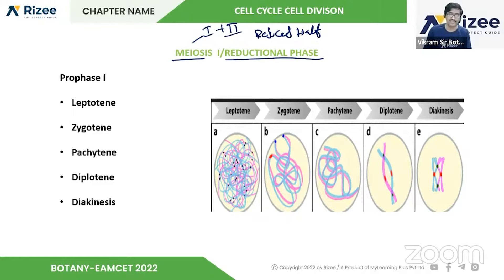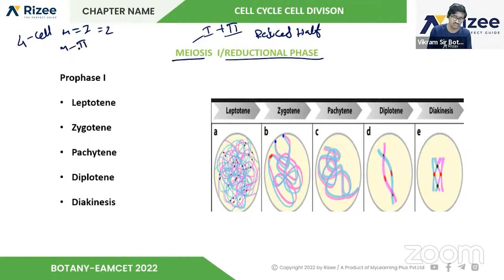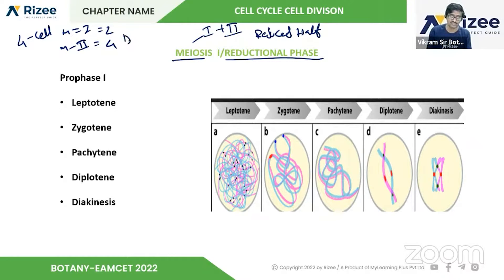In Meiosis 1, two cells will be formed, and in Meiosis 2, four daughter cells will be formed. DNA replication occurs only one time.